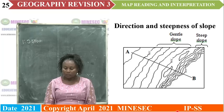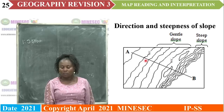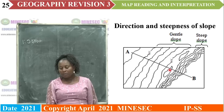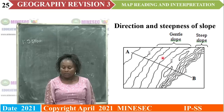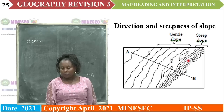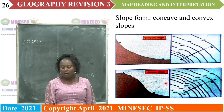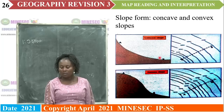The direction and steepness of the slope — slope AB slopes to the southeast. Spaced out contours show that the slope is gentle, and tightly packed contours show that the slope is steep. Then the form of the slope: this is concave, where the values are increasing outwards, and this is convex, where the values are also increasing outwards.